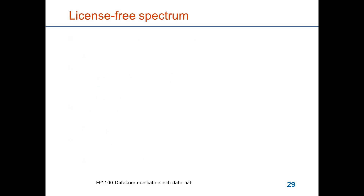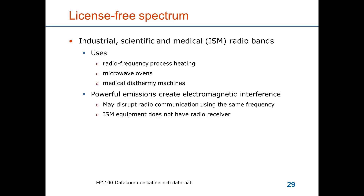One reason wireless LANs have become so popular is their use of license-free radio spectrum, specifically the ISM band set aside for industrial, scientific, and medical use — originally planned for radiofrequency process heating, microwave ovens, and medical diathermic machines. These create powerful electromagnetic interference; a microwave oven may emit more than a kilowatt. Since these ISM band devices do not have radio receivers, they are not disturbed by radio communication equipment operating in the same band, which is what wireless LANs exploit.